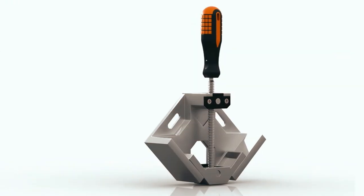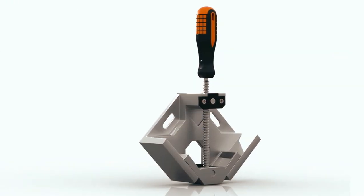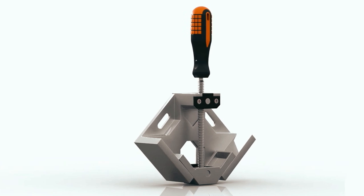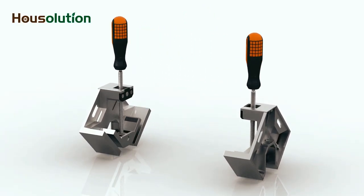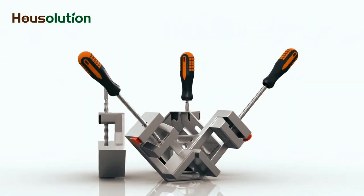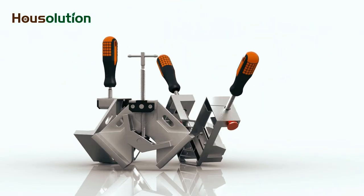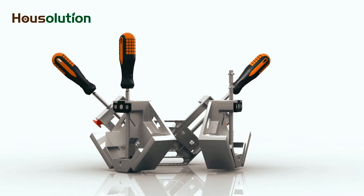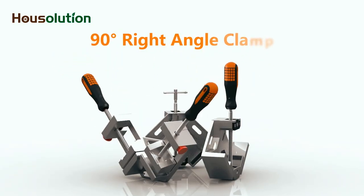The House Solution Right Angle Clamp can clamp various materials, including wood, metal, and even glass, while featuring a max jaw ratio of 2.7 inches. Also, this corner clamp features a floating head design which lets you clamp two objects with different thickness levels at a 90-degree angle.